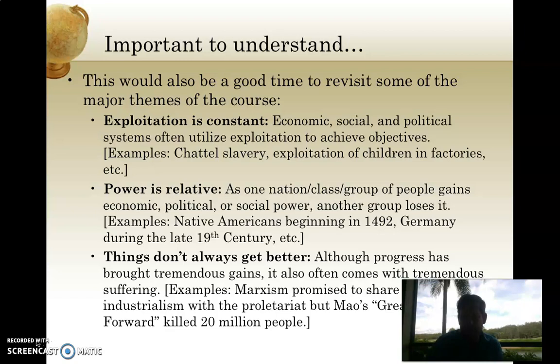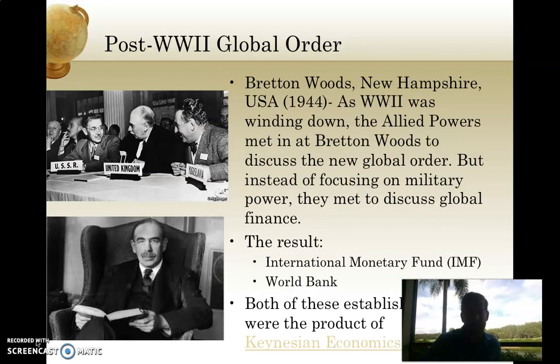My example here is that Marxism promised groups of exploited people — that is, working class people in the factories — certain protections. But as we saw in Mao's Great Leap Forward in China, the transition to communism killed more than 20 million people. So we have to remember that there's promise and then there's sacrifice, and things don't always get better. So let's get to 1945.